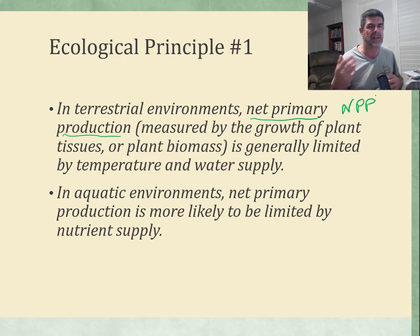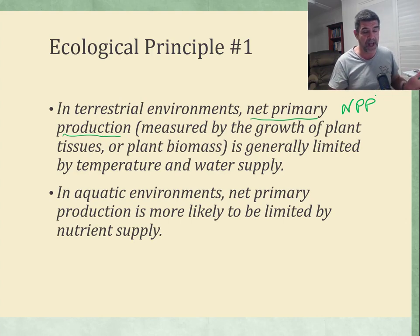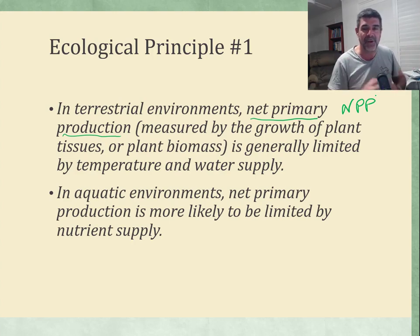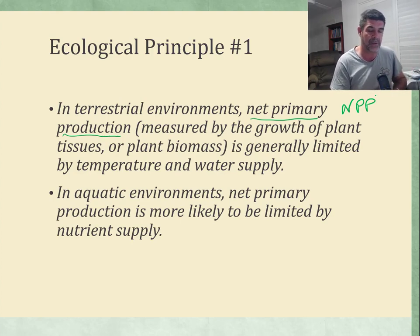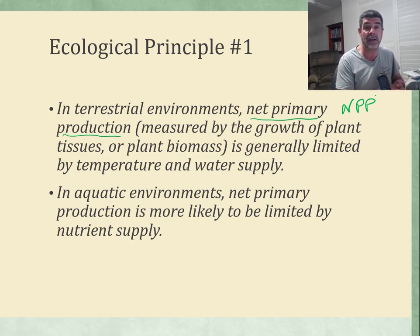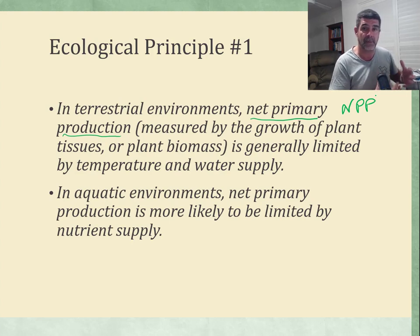Temperature is going to be linked to light, and we can have a discussion about photosynthesis and the importance of light. Water is one of those key compounds required for photosynthesis, so we need to make sure water supplies are sufficient for plants to carry out photosynthesis. In aquatic environments, water is not so much of a problem, and net primary production is more likely to be limited by nutrient supply — what nutrients are available for plants to grow.